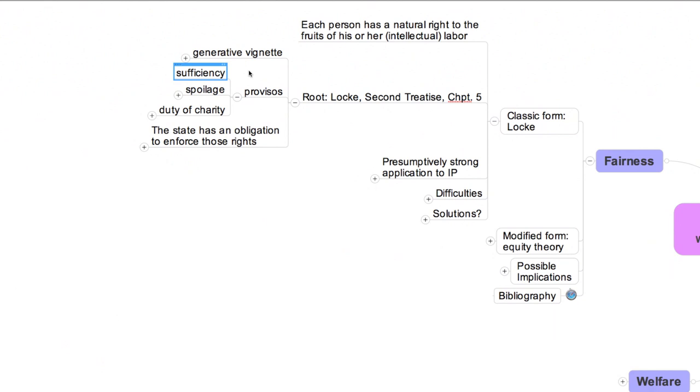Today, of course, the sufficiency proviso would impose much stricter limits on the ability of a person to acquire real property through labor. The second proviso is known as the spoilage proviso. According to Locke, if the farmer has grown so many crops that he's unable to consume them, and they rot in his barn, he not only forfeits his right to the unused crops, but also his right to as much of the land as was necessary to grow them. In other words, his legitimate holding shrinks.